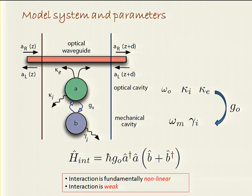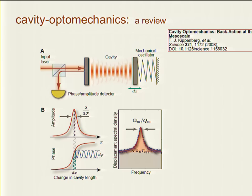The interaction Hamiltonian is H-bar G-naught times A-dagger A times (B plus B-dagger). A-dagger A is the intensity of the light field inside the cavity, and (B plus B-dagger) is the normalized position operator of the mechanical system. The radiation pressure force is proportional to the number of photons inside the cavity and scales with G-naught. The key point is that the interaction is fundamentally nonlinear — it depends on optical intensities, not linearly on the fields — and is parametrically enhanceable.